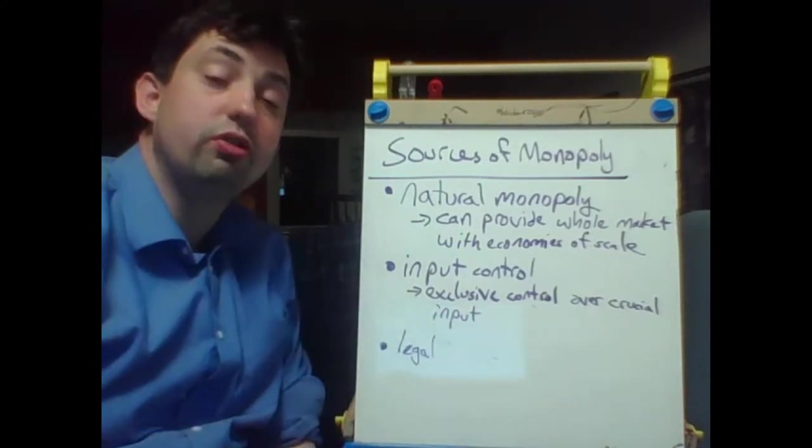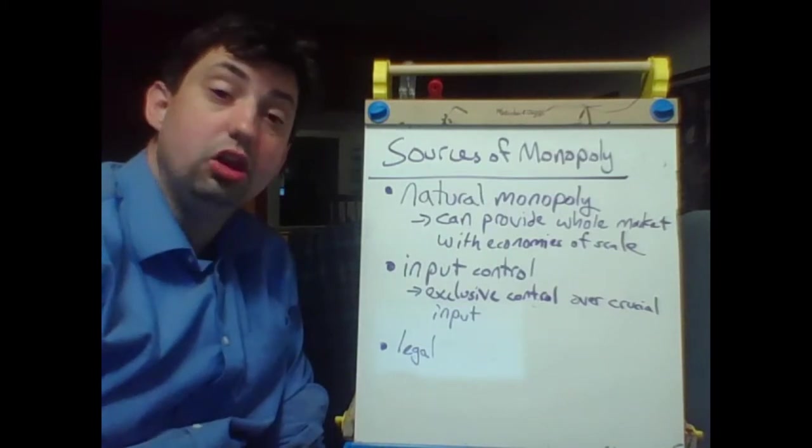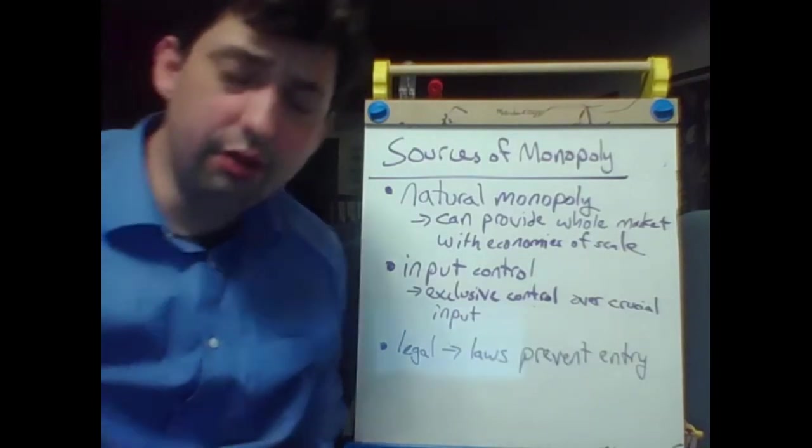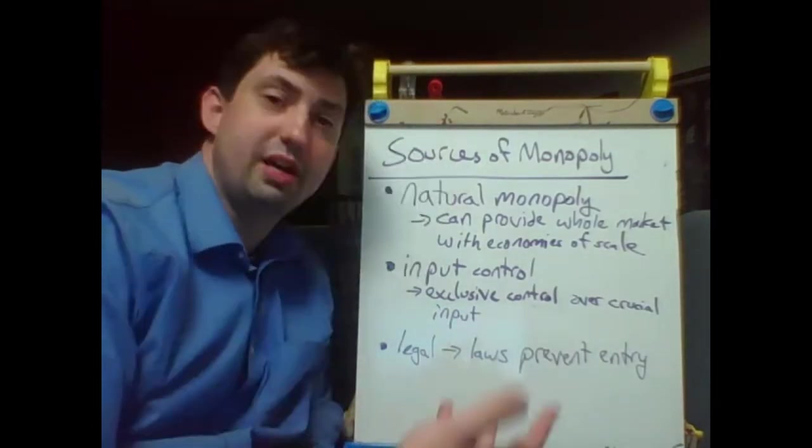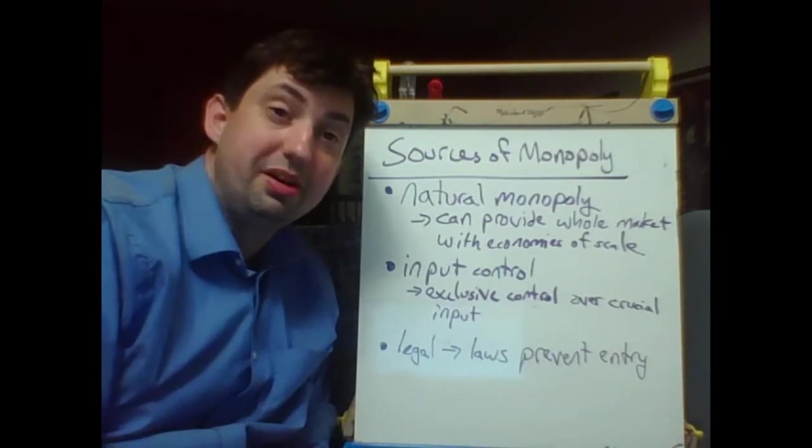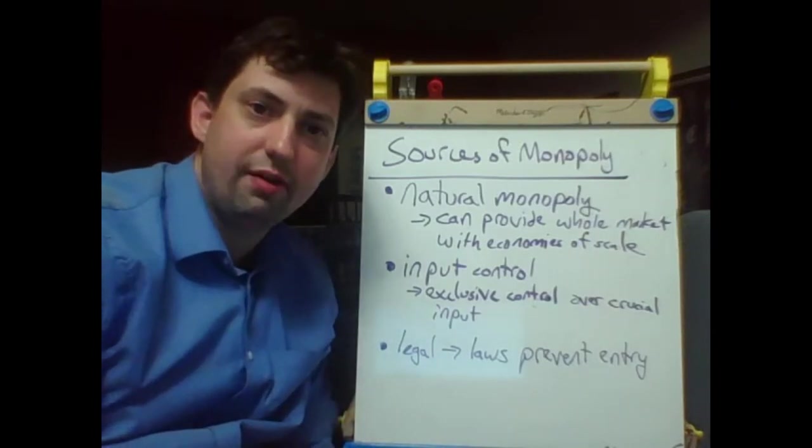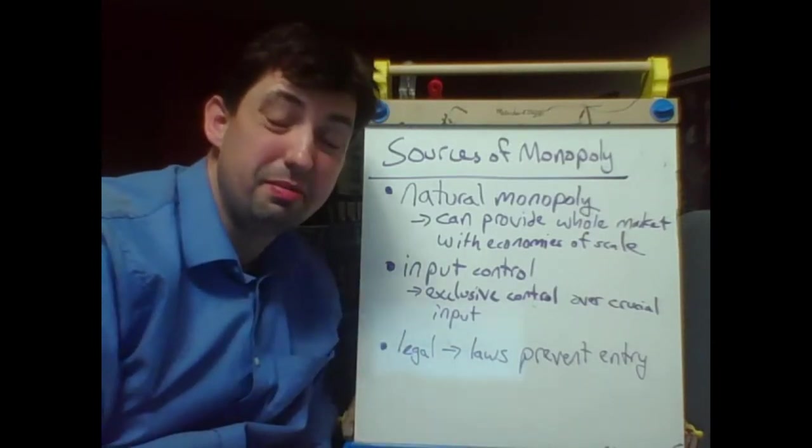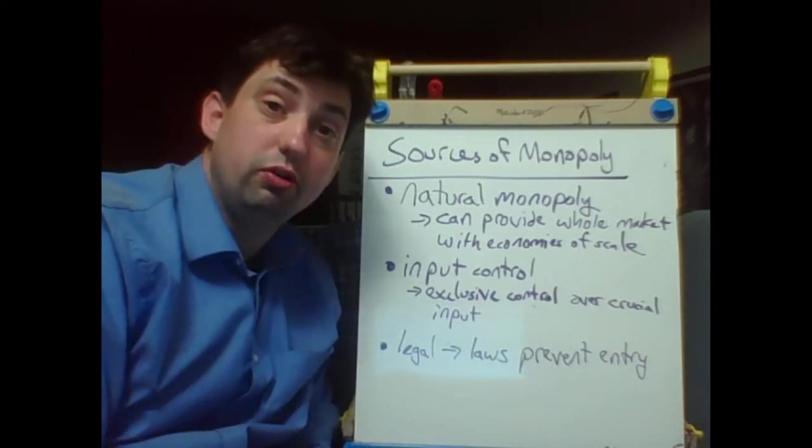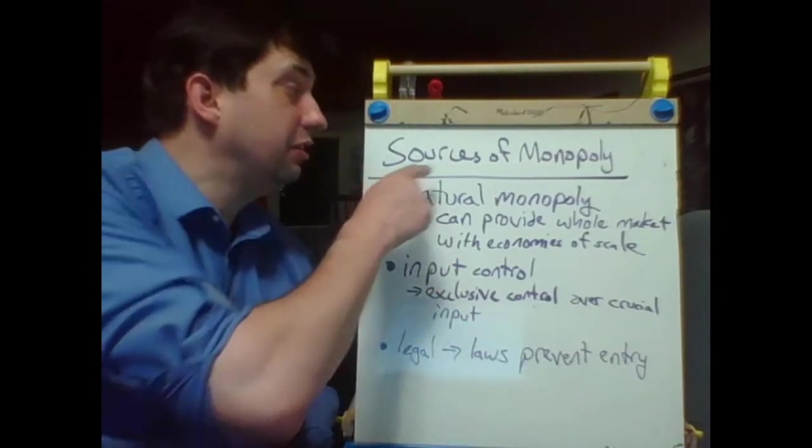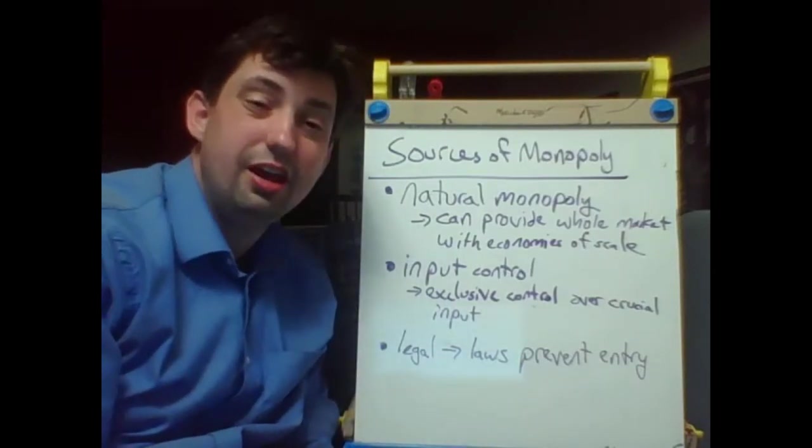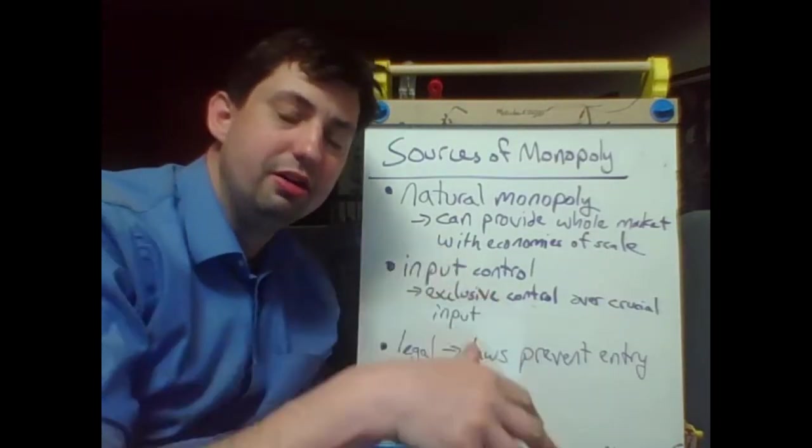A really common source of monopoly power that was legal. Laws literally prevent entry. There is some sort of barrier to entry that the government has erected, like it's hard to become a doctor, not just because the training is difficult, but because you have to get approval from the AMA to be licensed from the American Medical Association. Licensing, in general, is a major source of some kind of market power, not necessarily a monopoly. In that truth, there's only one provider, but it is a barrier to entry that makes it good for people who are already in the industry, I should say.